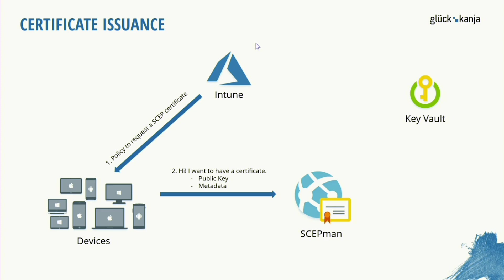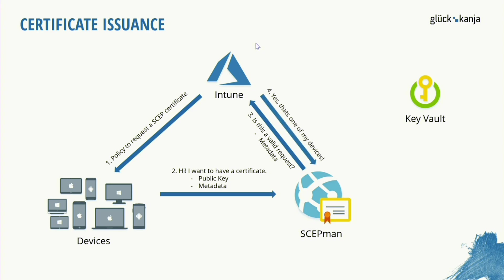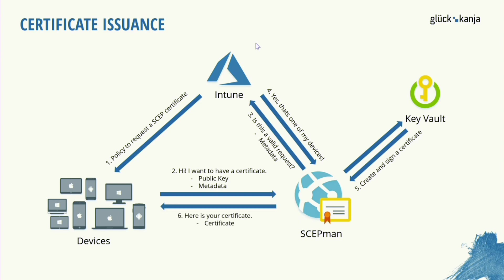The device says: 'I want a certificate — here is my public key and metadata.' The metadata contains device-specific information. SCEPman sends this metadata to Intune to protect against false requests. SCEPman asks Intune: 'Is this a valid request?' Intune checks its policies and confirms: 'Yes, this is a device that wants a certificate.' SCEPman then creates a certificate, signs it with its root key stored in Azure Key Vault, deploys the certificate to the client, and says: 'Here is your certificate.' The device places it in its personal certificate store.